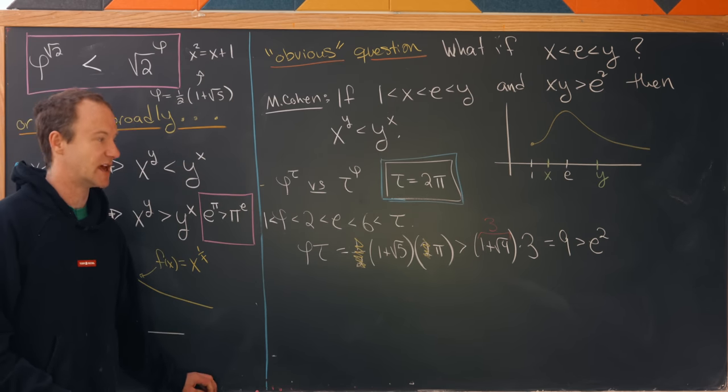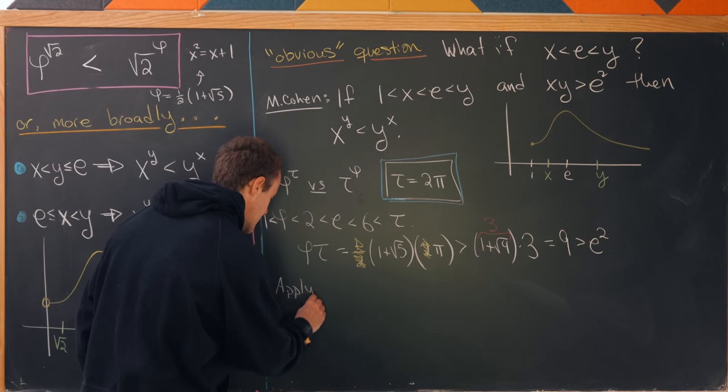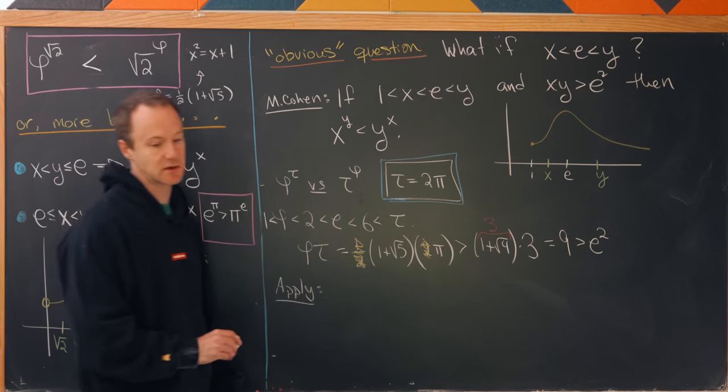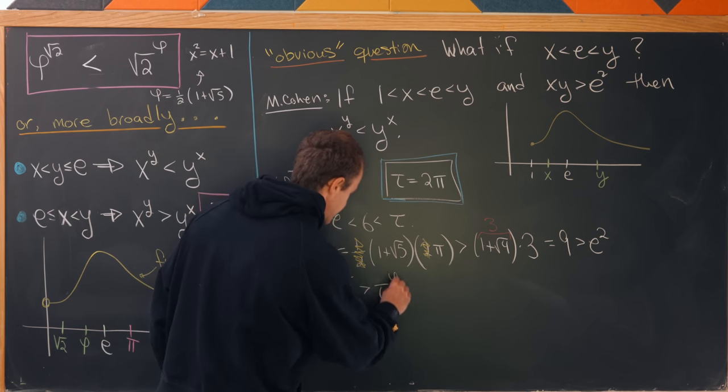So, we have our setup. So, now we can apply this theorem and we have our result. And that says that phi to the tau is, in fact, bigger than tau to the phi.